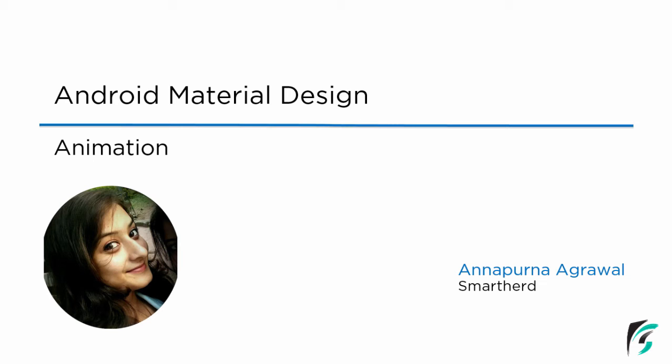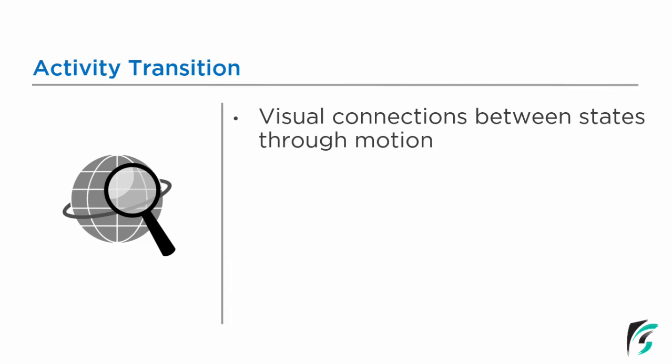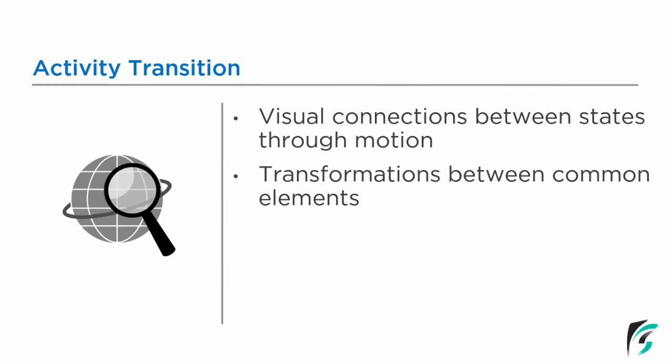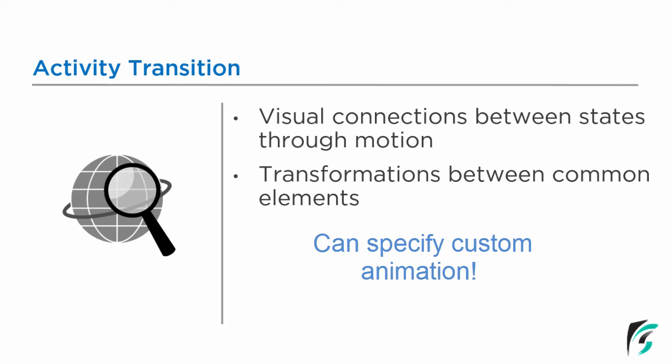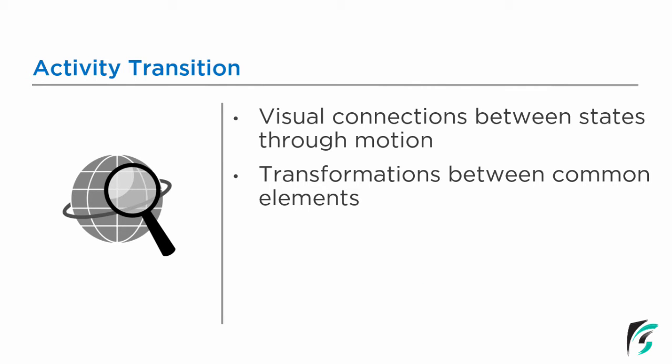The material theme also provides various default activity transitions. In this video, we will be starting with the activity transition provided by the Android material theme. The activity transition in material design provides a visual connection between states through motion. It also provides transformation between common elements — we can specify custom animation for transformation between two common elements or provide a visual connection between two activities.